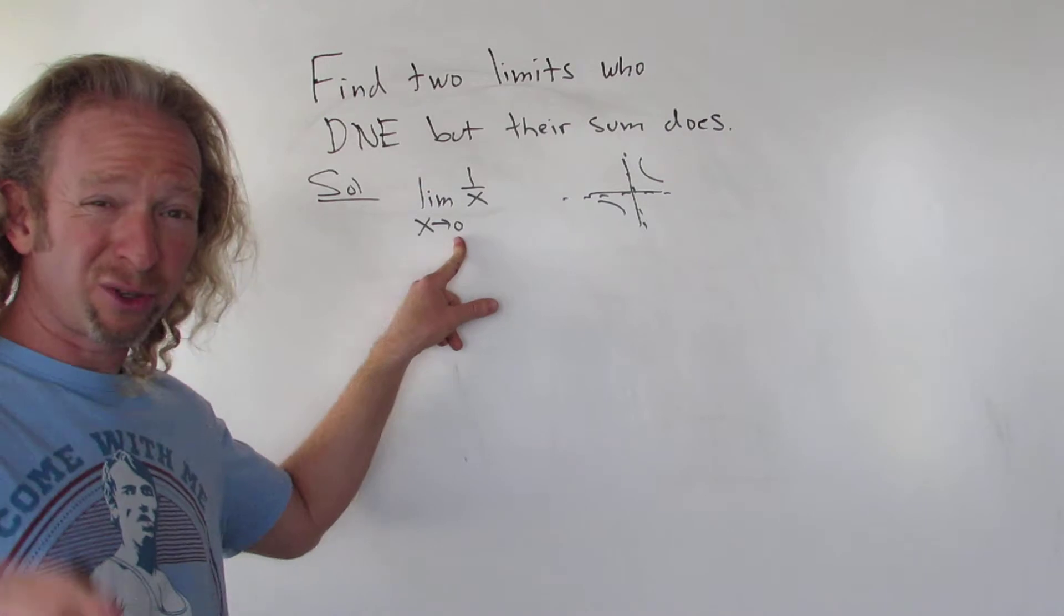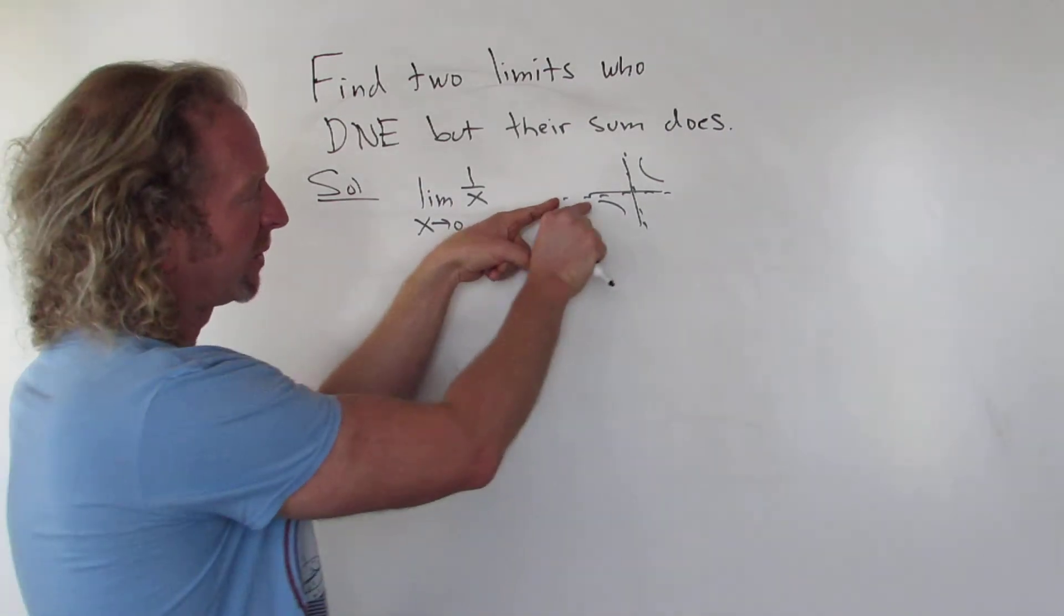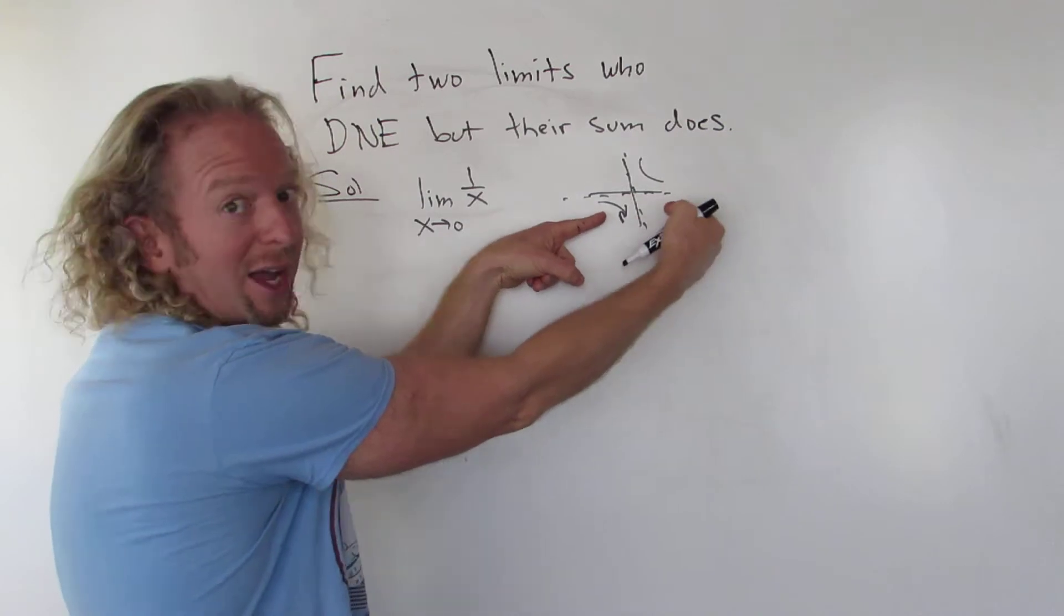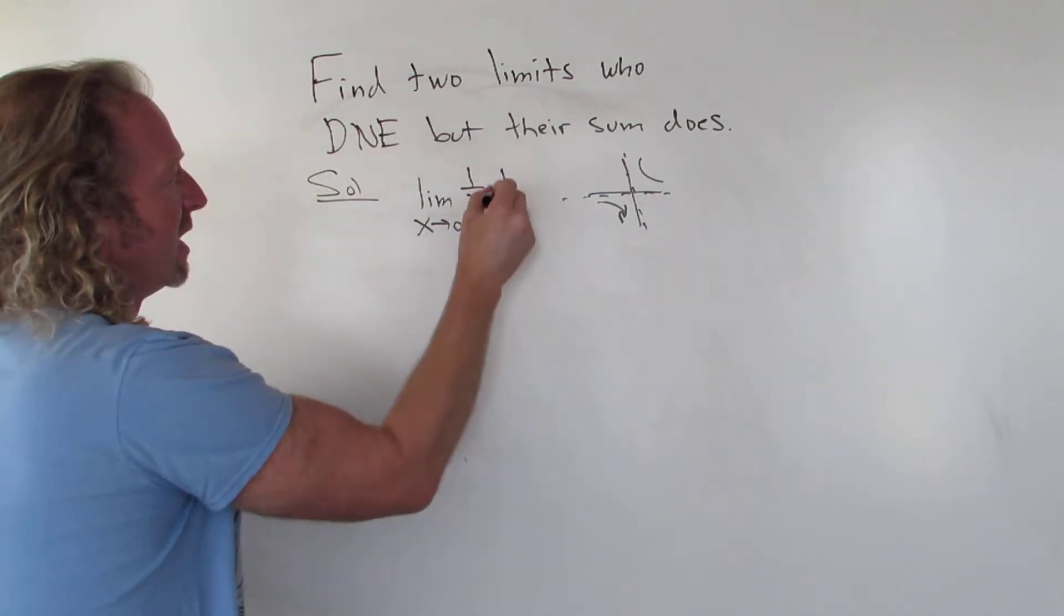DNE. Again, this means you're approaching 0 from the left and from the right. So from the left, it goes down forever, so you get negative infinity. From the right, it goes up forever, so you get infinity, so it's DNE.